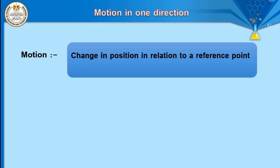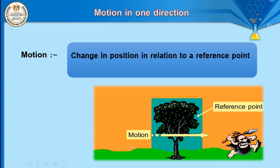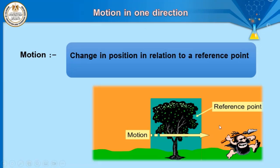What does this mean? When an object moves from one place to another — for example, a person, a cat, or any object — it will start motion from one point and move to another. The first point is called the starting point and the second is called the final point. This motion can be determined according to a reference point, which is the point we must pass to reach the end point. When the object moves and its position changes, we describe it as an object in motion. We can conclude that motion is a change in position in relation to a reference point.